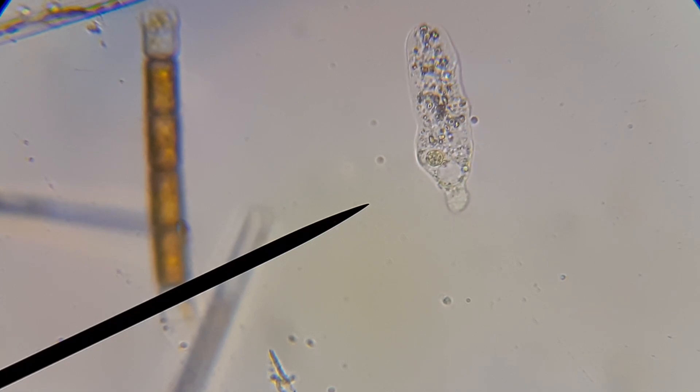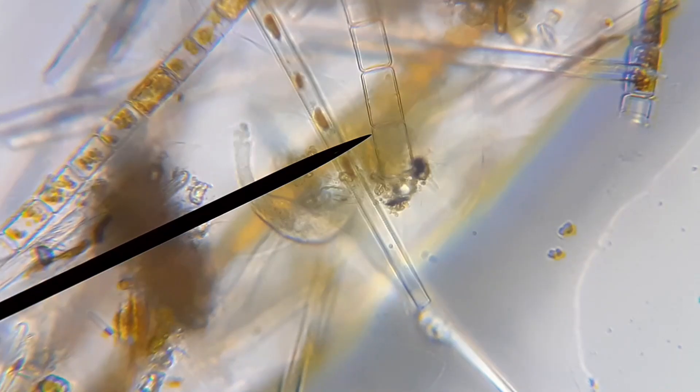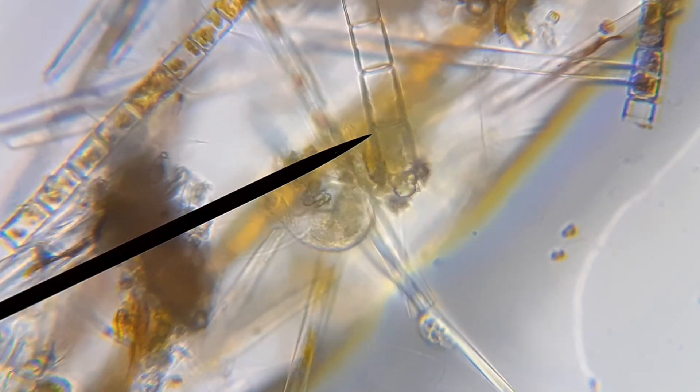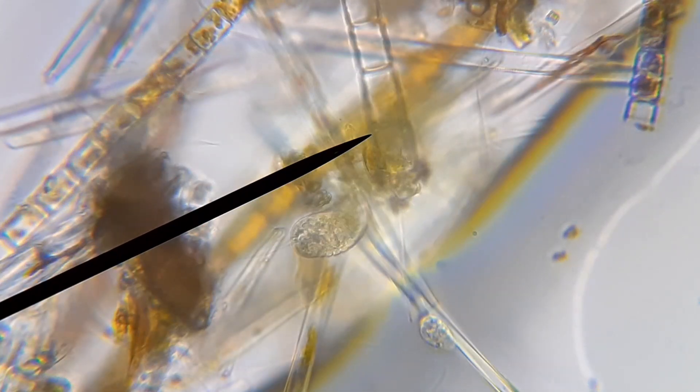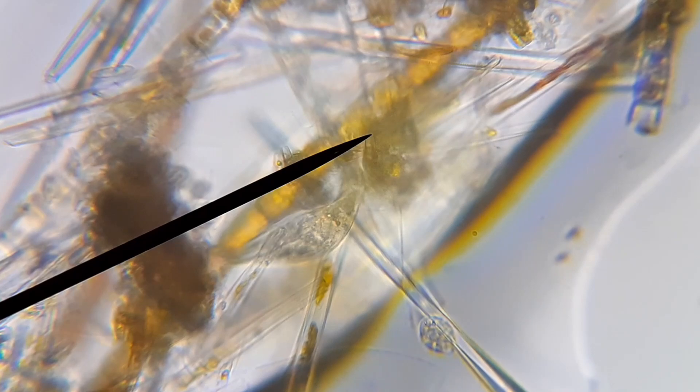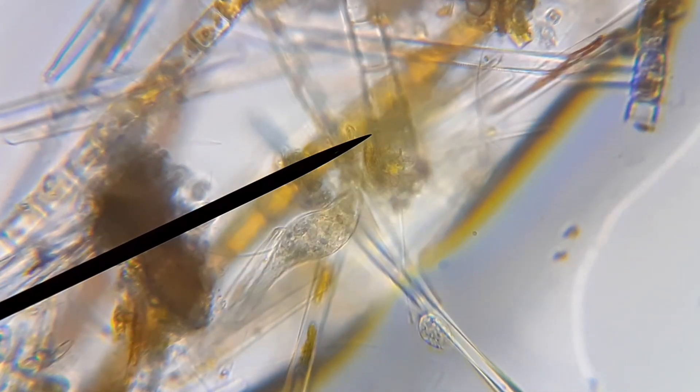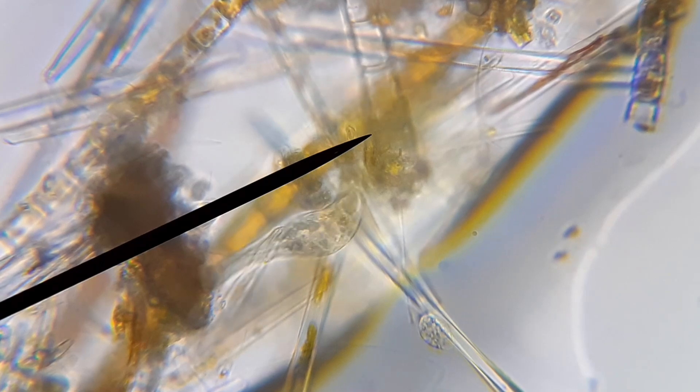Lacrimaria, that is the name of this ciliate. It's a very long neck and it's hunting for food. All of the other things that you see in the background, these are algae of course.